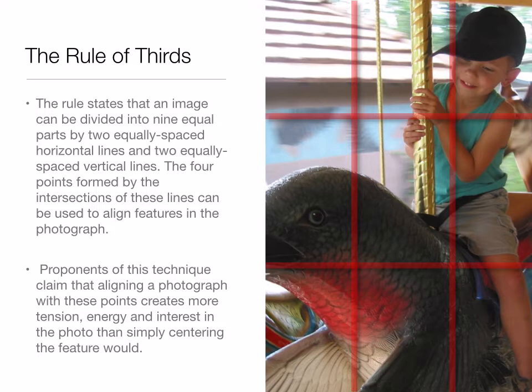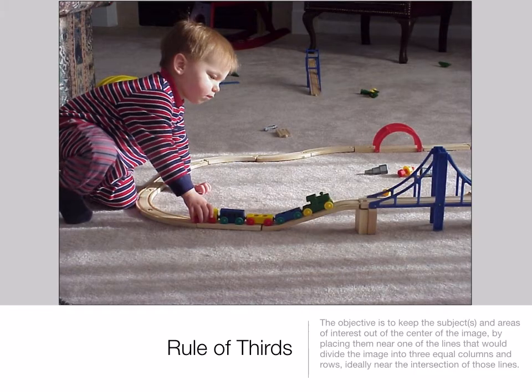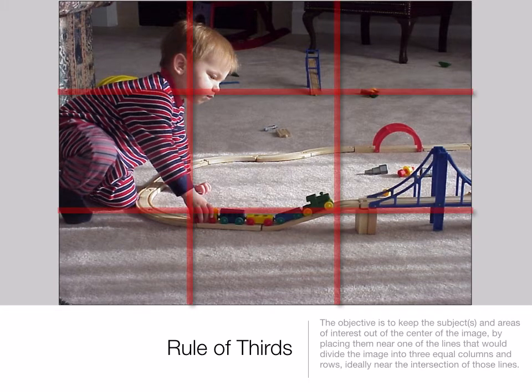We'll look at some pictures following the rule of thirds. Here, our subject is right at that point on the left corner. Notice that he's looking to the right, allowing lead room for the viewer to see what he's looking at. Imagine how different this photo would look if he was on the right side still looking to the right — you wouldn't know what he was engrossed in or staring at.